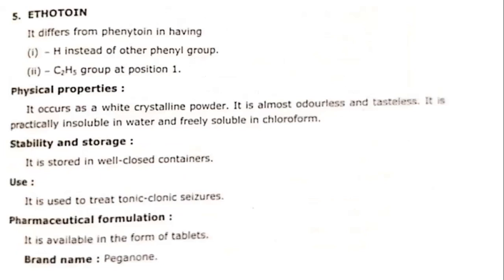Next is ethotoin. It differs from phenytoin in having a hydrogen in place of the phenyl group and a methyl group at position one. Physical properties: it occurs as a white crystalline powder, is almost colorless and tasteless. It is practically insoluble in water and freely soluble in chloroform. It is stored in well-closed containers. It is used to treat tonic-clonic seizures and clonic seizures, and it comes as a tablet.